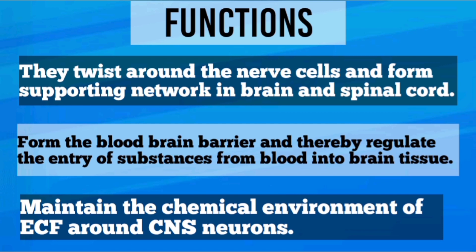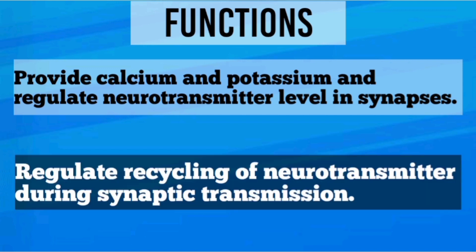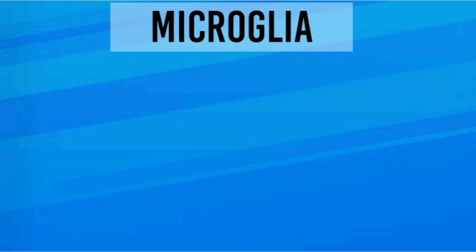Astrocytes maintain the chemical environment of extracellular fluid around the central nervous system. They provide calcium and potassium, and regulate neurotransmitter levels in synapses as well as the recycling of neurotransmitters.